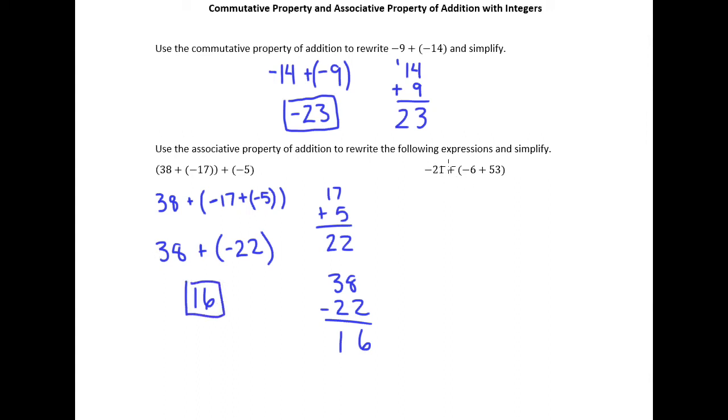In this example here, we'll use the associative property here. We initially have the second and third numbers being added first, but we're going to switch it to the first and second. So I'll put a parenthesis there, -21 plus...